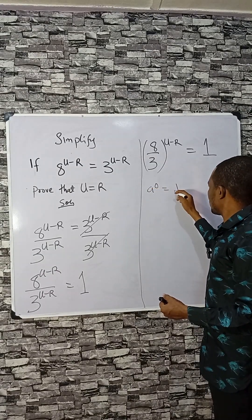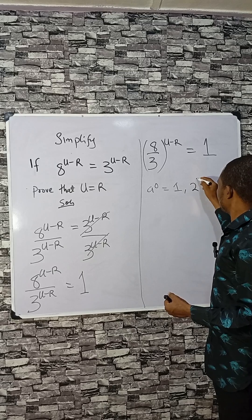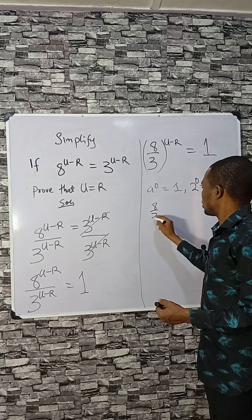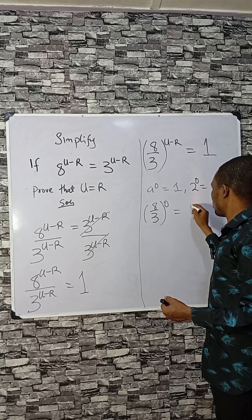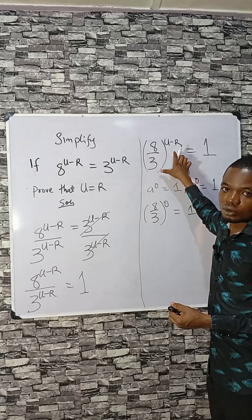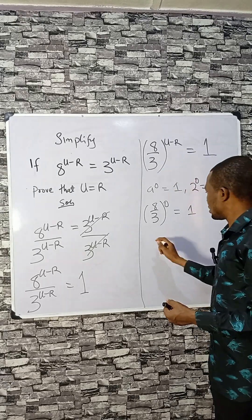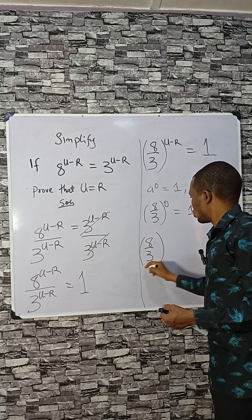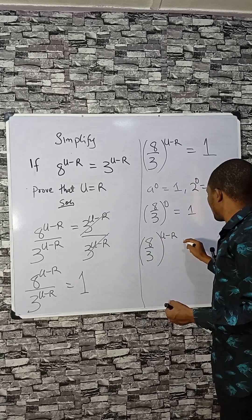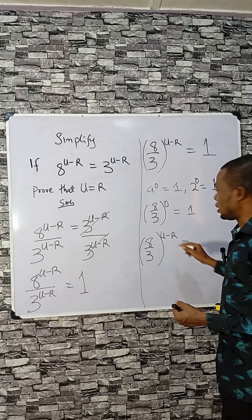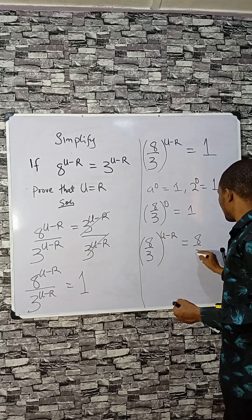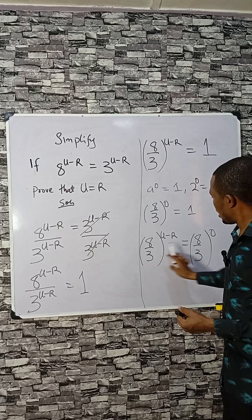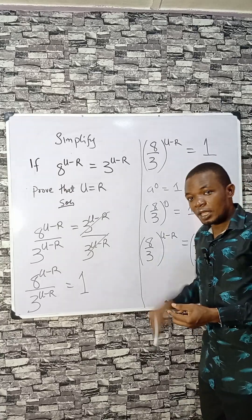Now, if a raised to power 0 is 1 — even 2 raised to power 0 is 1 — that means 8 over 3 raised to power 0 is also 1. So (8/3) raised to power 0 equals 1, and (8/3)^(u−r) equals 1 as well. Now they have the same base, so we can compare the powers.